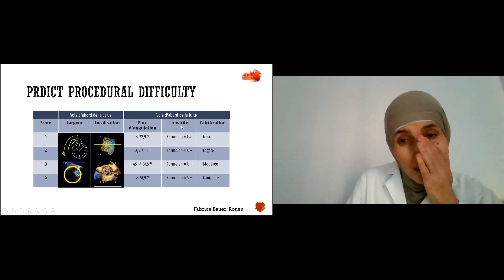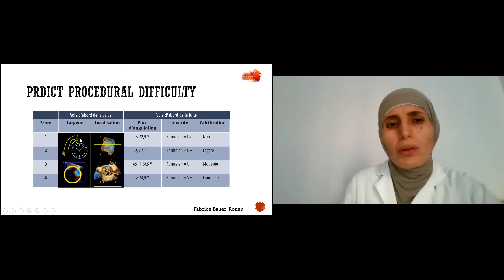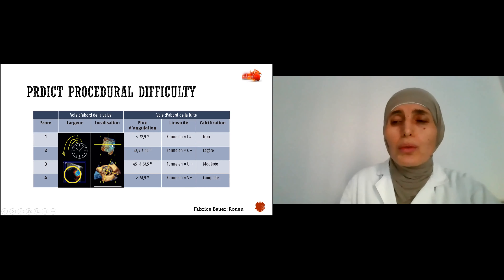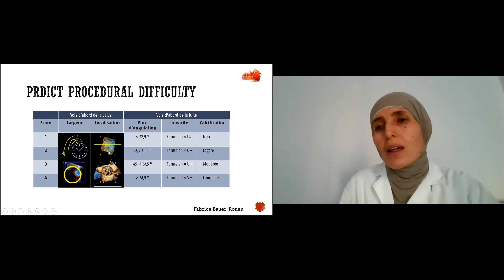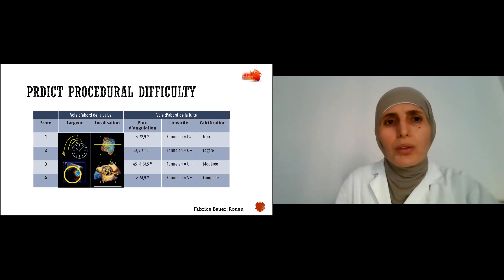To predict the difficulty of the procedure, many parameters were studied. In 2D and 3D echocardiography we can study the dimensions of the paravalvular leak and its localization, because lateral and anterior localizations for the mitral valve are much less difficult than septal and posterior sides, which are difficult to reach by an anterograde approach. This may indicate an alternative approach like trans-apical. Angulation, tortuosity, and calcifications are also parameters of procedural difficulty.